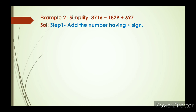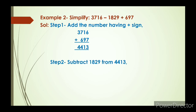Now we solve. Step 1: add the numbers having a plus sign. From the question, the numbers with a plus sign are 3716 and 697. After adding these two numbers we get 4413.